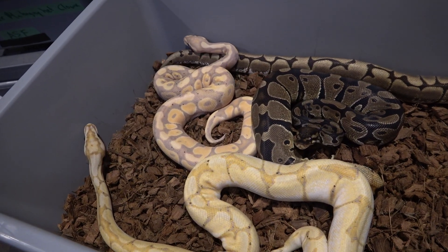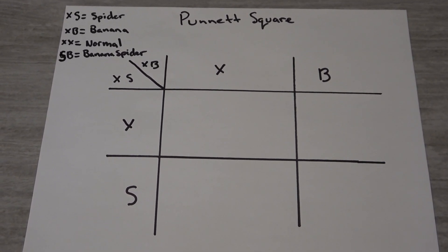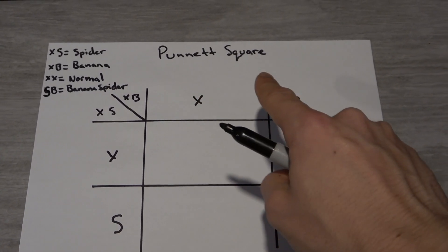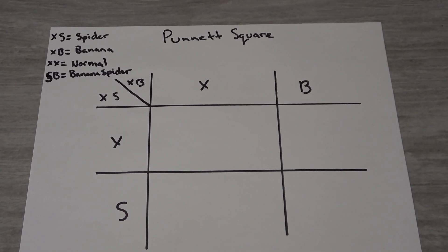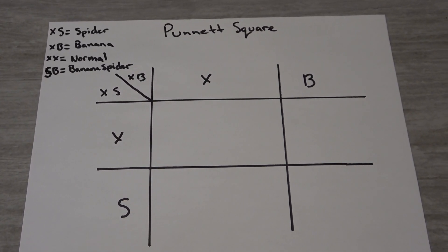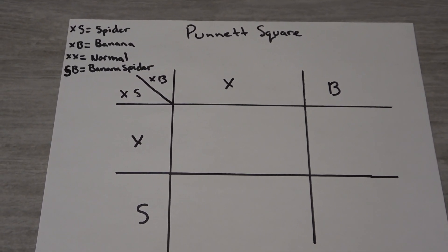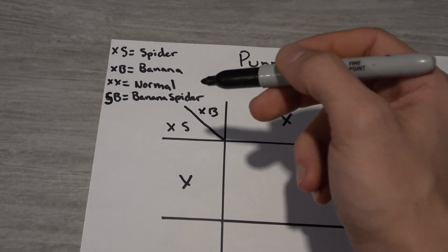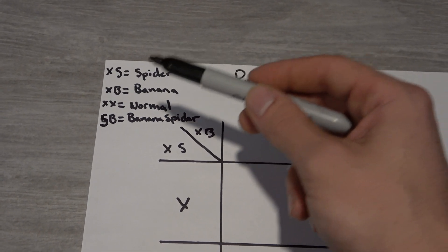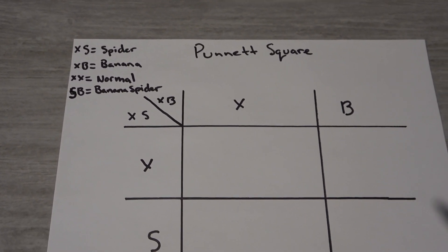Right here I drew a Punnett square — sorry for the messy handwriting. Here's how you spell Punnett square if you want to look up more information. This is simple biology many of you probably learned in high school. A good thing to do is draw a legend. I like to express every gene with an X and then the letter of the gene: XS is spider, XB is banana, XX is normal, and SB is a banana spider.